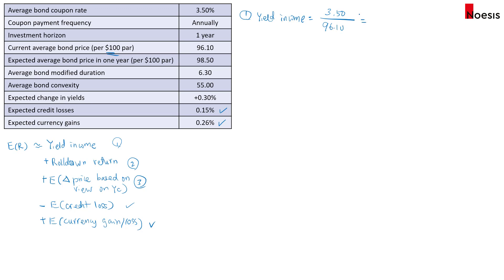Then the roll down return will be the change in price over that horizon. So that's 98.5 at end of the year minus 96.1 over 96.1. So that gives us a return of 2.5%, assuming that there is no changes to the yield curve. So in the exam, if they were to ask for the rolling yield, then you will add up these two numbers.